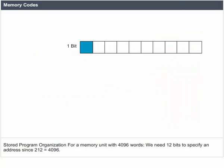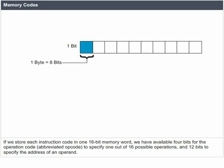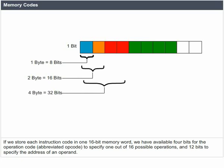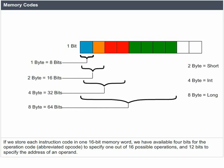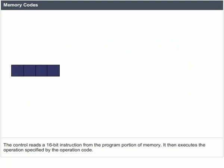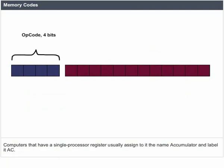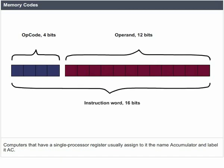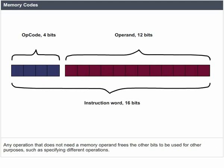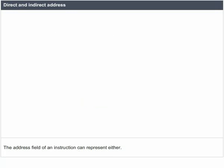For a memory unit of 4096 words, we need 12 bits to specify an address since 2¹² equals 4096. If we store each instruction code in one 16-bit memory word, we have 4 bits available for the operation code (opcode) to specify 1 out of 16 possible operations, and 12 bits to specify the address of the operand. The control reads a 16-bit instruction from the program portion of memory and executes the operation specified by the operation code. Computers with a single processor register usually assign to it the name accumulator, labeled AC.